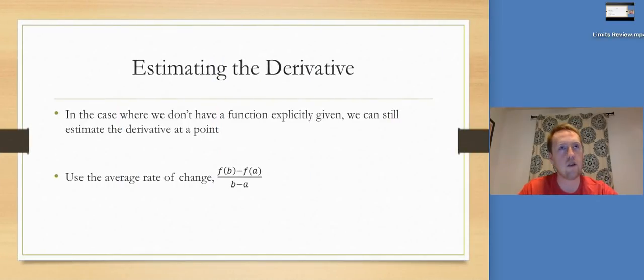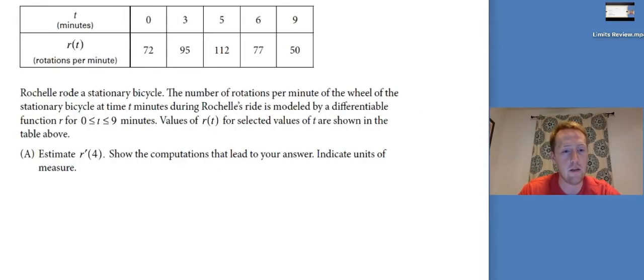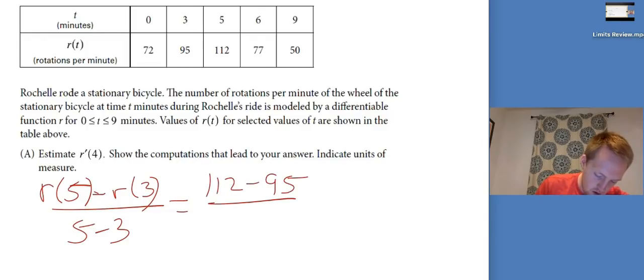Last idea, estimating the derivative. You guys are very good at this. If we don't have a function, we have a table value, a set of table values instead, we're just going to estimate the instantaneous rate of change using the average rate of change F of B minus F of A. So we've got Rochelle riding her bike again. We're going to estimate R prime of 4, so we need to find the smallest interval that contains 4. Well, that'd be 3 to 5. So I'm going to do R of 5 minus R of 3 over 5 minus 3. That's 112 minus 95 over 5 minus, over, I guess I can just do that, that's 2. Which is 17 over 2.